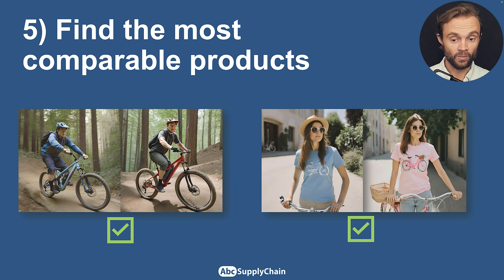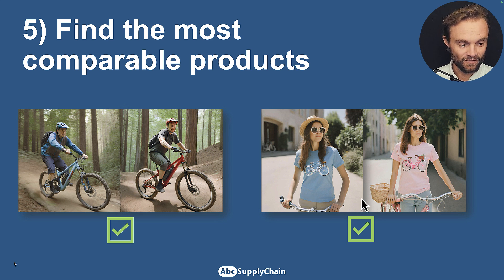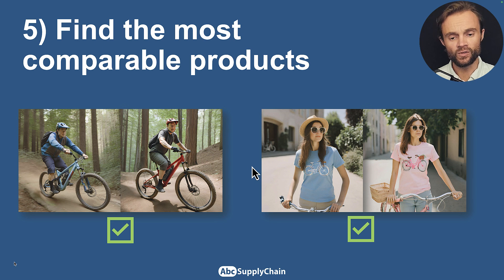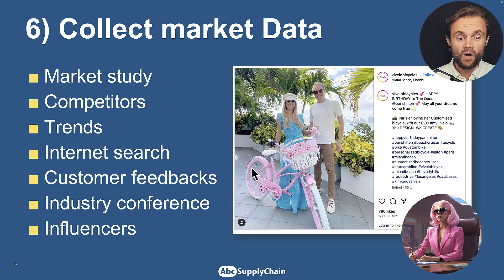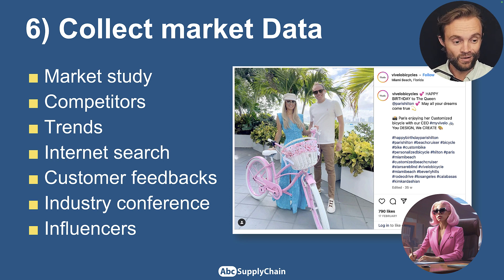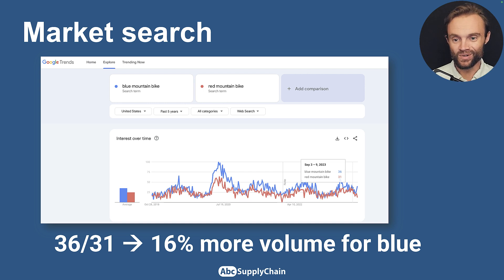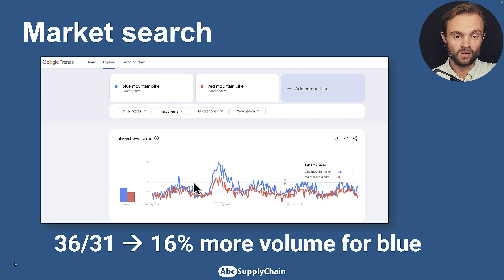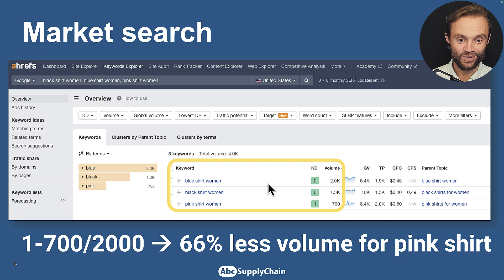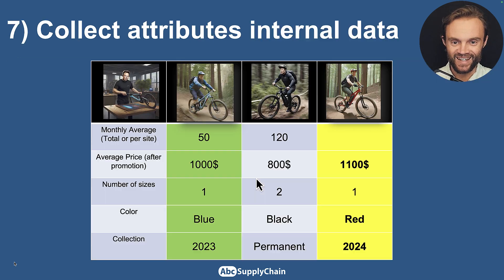Once you have the attributes, you can find the most comparable products. For example, this new bike is very similar to this existing one — a perfect match. For fast fashion, the blue t-shirt is the comparable for the new pink one. You can also check outside your company: market studies, competitor trends, products your competitors already have on the market, influencers, conferences, and online tools. For example, Google Trends can show you that blue mountain bikes have 16% more search volume than red ones.